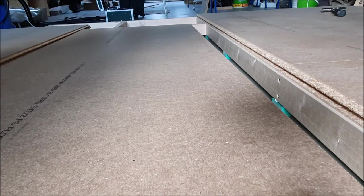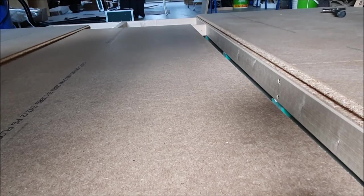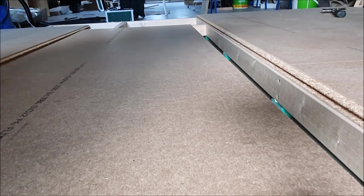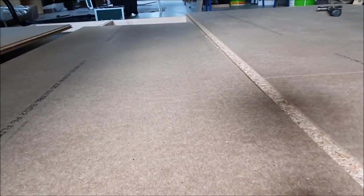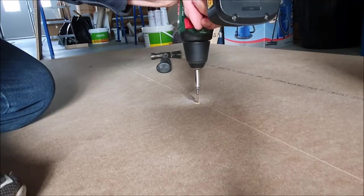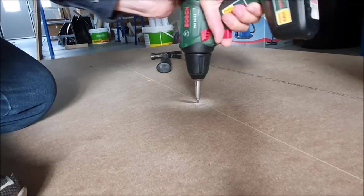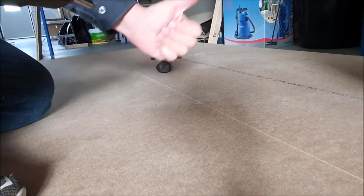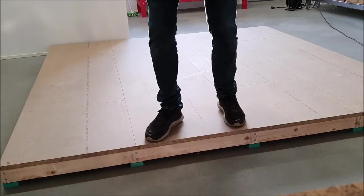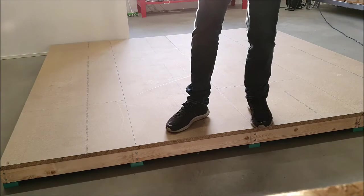Then we put some chipboards on the wooden joists. The chipboard is 22 mm thick. And you can also add some plaster boards if you like. Now the floating floor is ready.